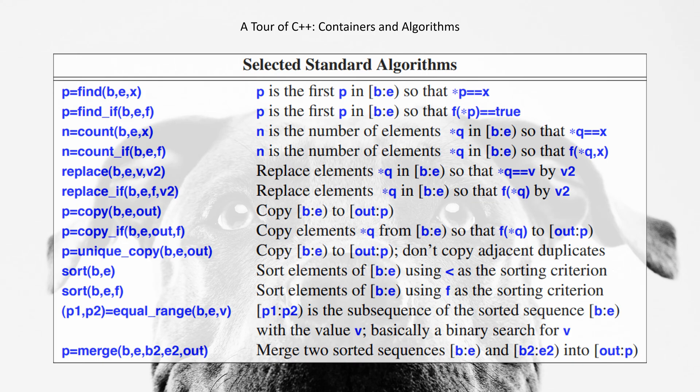n=count(b,e,x) - n is the number of elements *q in [b,e) so that *q equals x. n=count_if(b,e,f) - n is the number of elements *q in [b,e) so that f(*q) is true.